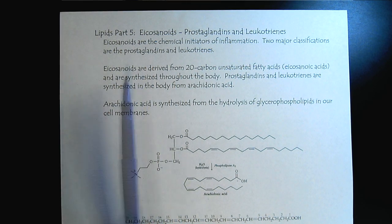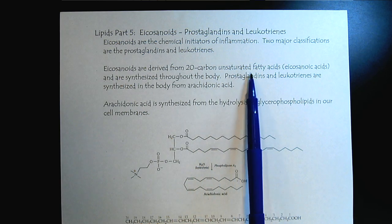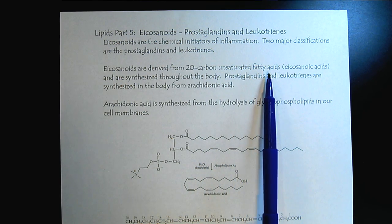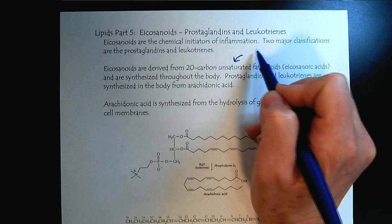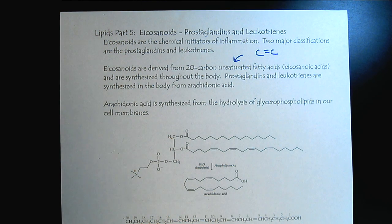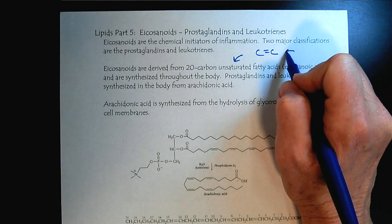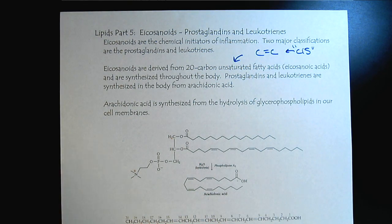Eicosanoids are grouped together because they're all derived from 20-carbon unsaturated fatty acids. When you see the word unsaturated, what should come to mind is that we're going to have carbon-carbon double bonds. Because we're talking about biological molecules, remember that they're always going to be in the cis stereoisomer form.